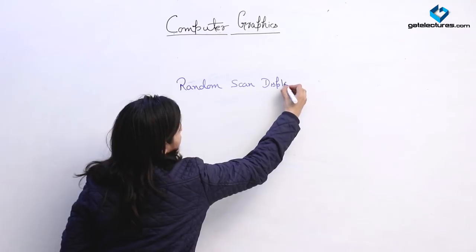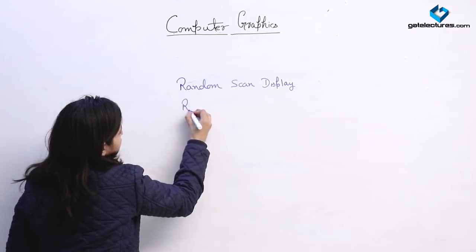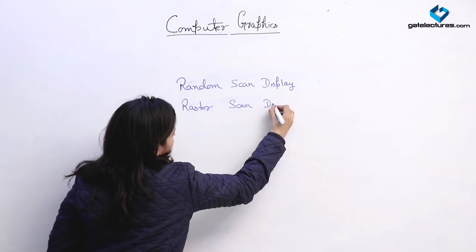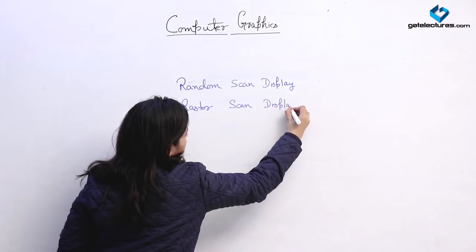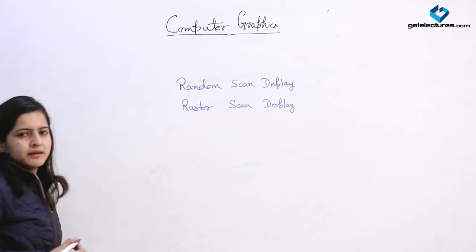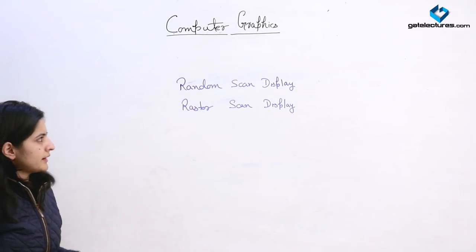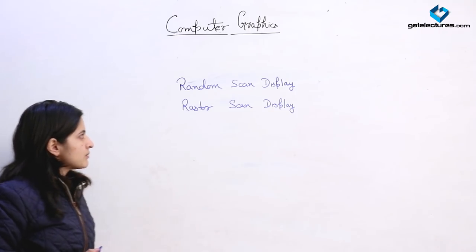Random scan display and raster scan display. A picture in a CRT can be created on a screen by these two displays: random scan display and raster scan display.